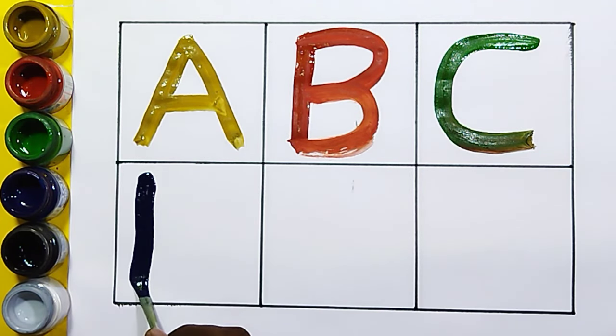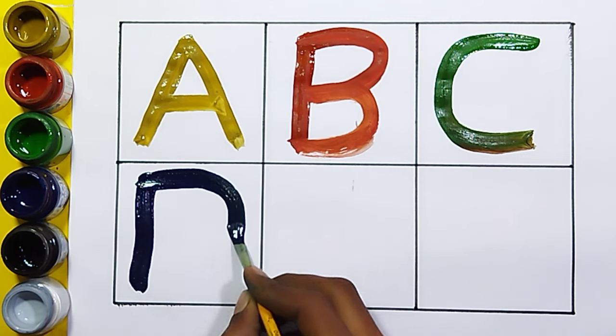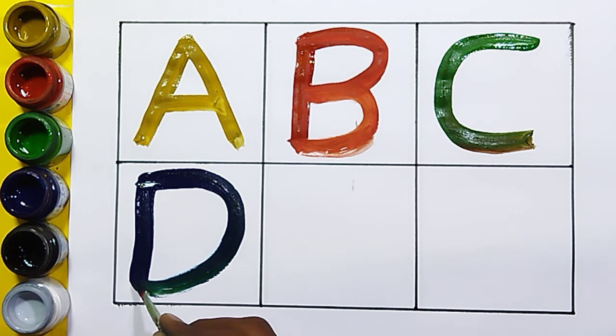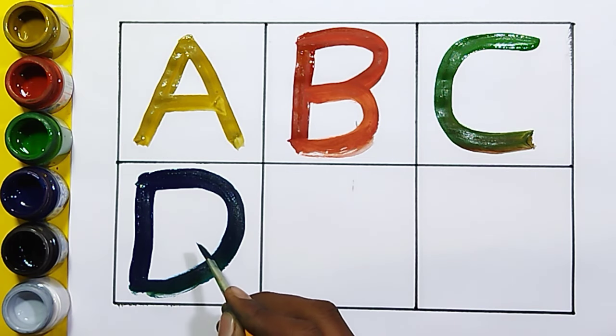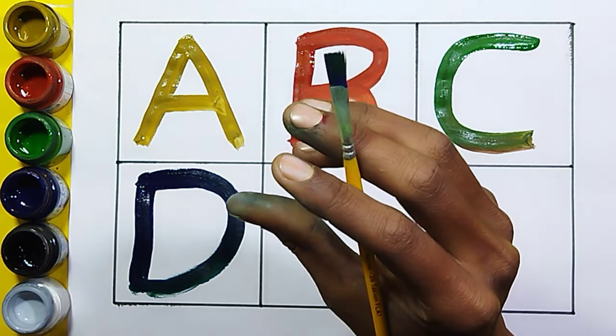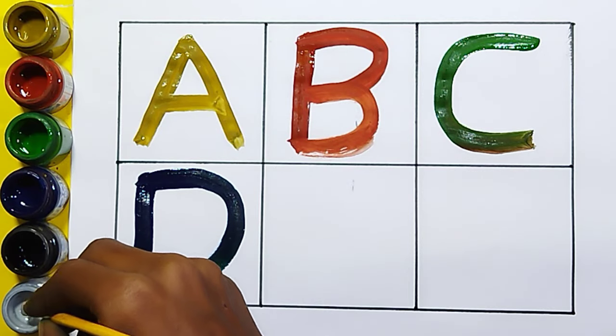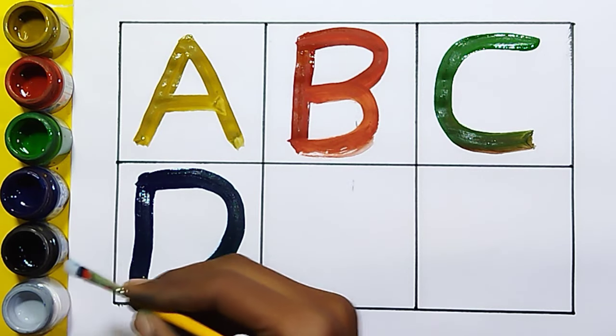D, D for Dog. Dog means Kutta. Gray color.